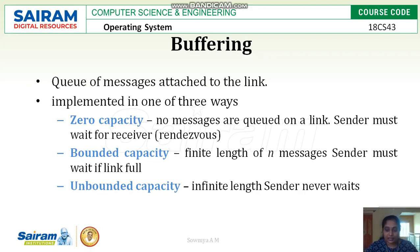Since shared data is stored for a shorter period of time, we use a shorter storage version called buffering. Buffering can be implemented in three types: zero capacity buffer, bounded capacity, and unbounded capacity. In zero capacity buffer, there is no buffer size defined and no messages are queued. The sender must wait for the receiver, and as soon as the sender sends the data, the receiver will read it immediately.